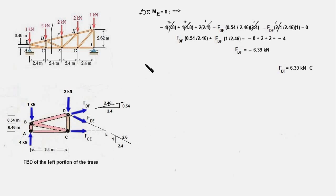So now let us write the equation. The 4 kN force produces a clockwise moment, therefore it is minus 4 times 4.8. The moment of 1 kN is 1 times 4.8, that of 2 kN force is 2 times 2.4, and this is the moment of the vertical component of FDF. FDF times 0.54 upon 2.46 is the y component and the moment arm for this is the distance CE which is 2.4 meters, and this will be clockwise direction therefore the negative sign.